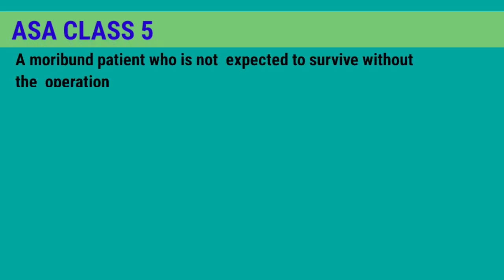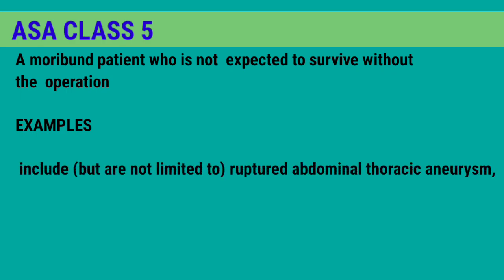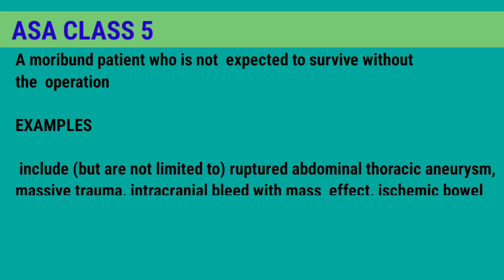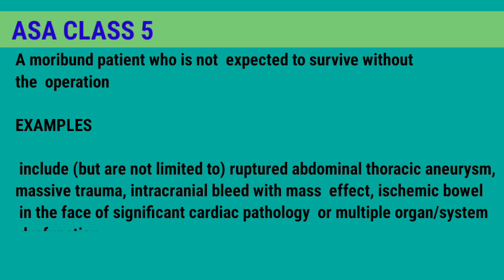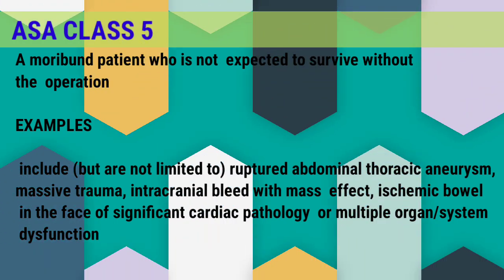ASA Class 5 is a moribund patient who is not expected to survive without the operation. Examples include ruptured abdominal or thoracic aneurysm, massive trauma, intracranial bleed with mass effect, ischemic bowel in the face of significant cardiac pathology, or multiple organ system dysfunction.